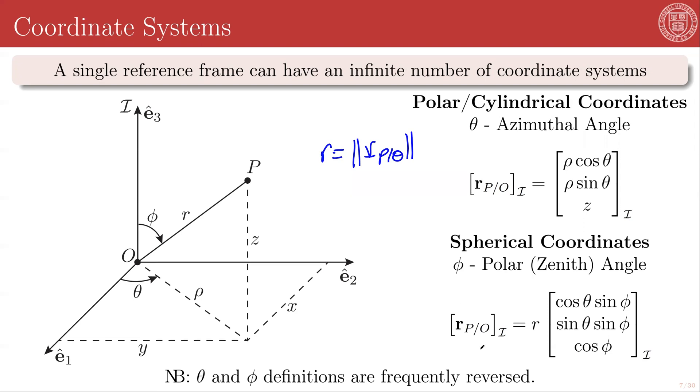So in the spherical set, we have the magnitude times this stuff. And if you look at this, this defines a unit vector, right? Because if you take the norm of this, you will always get a norm of one.